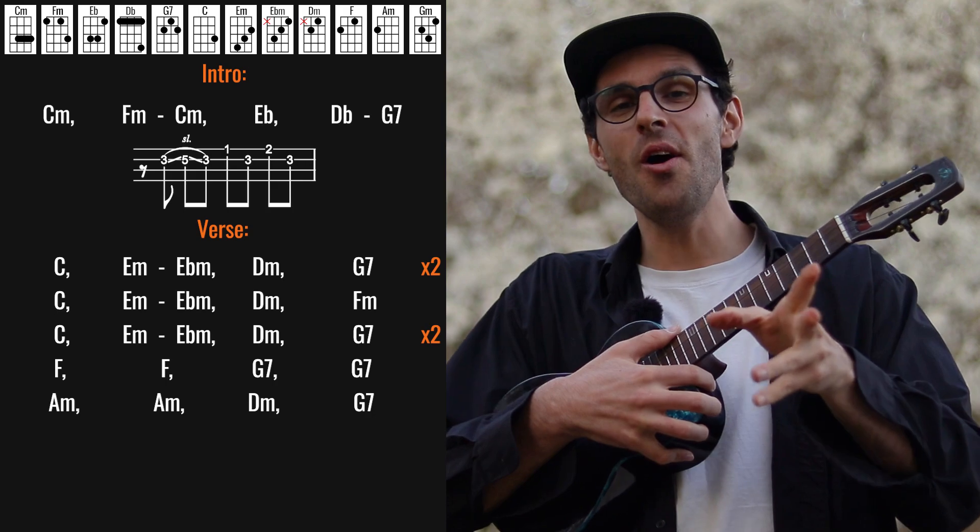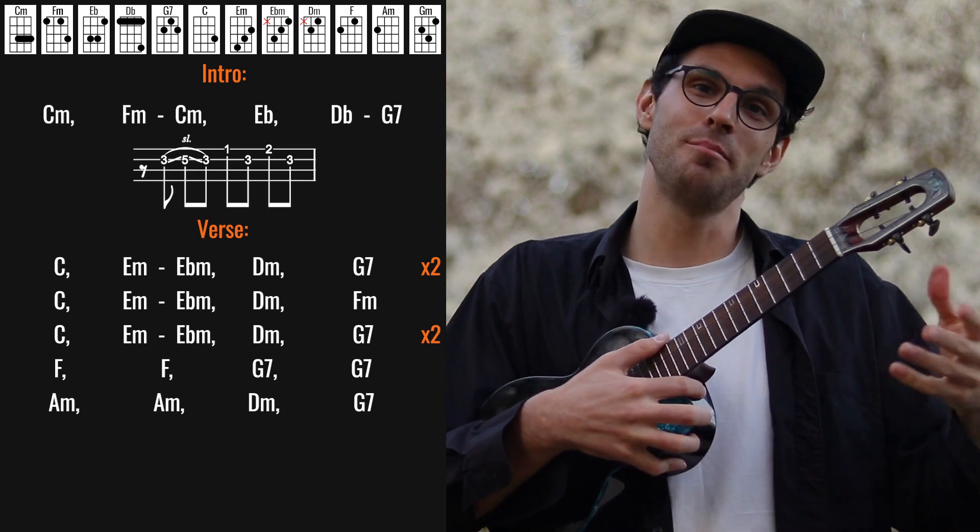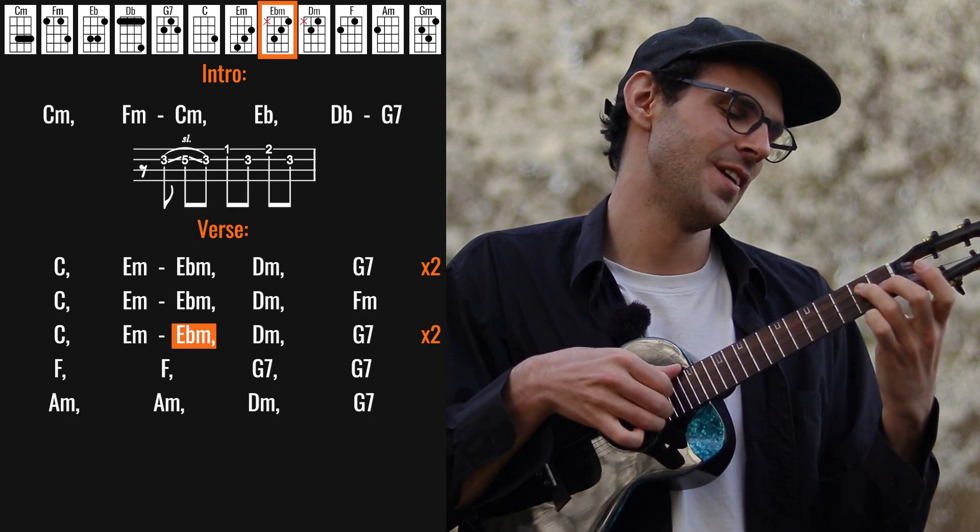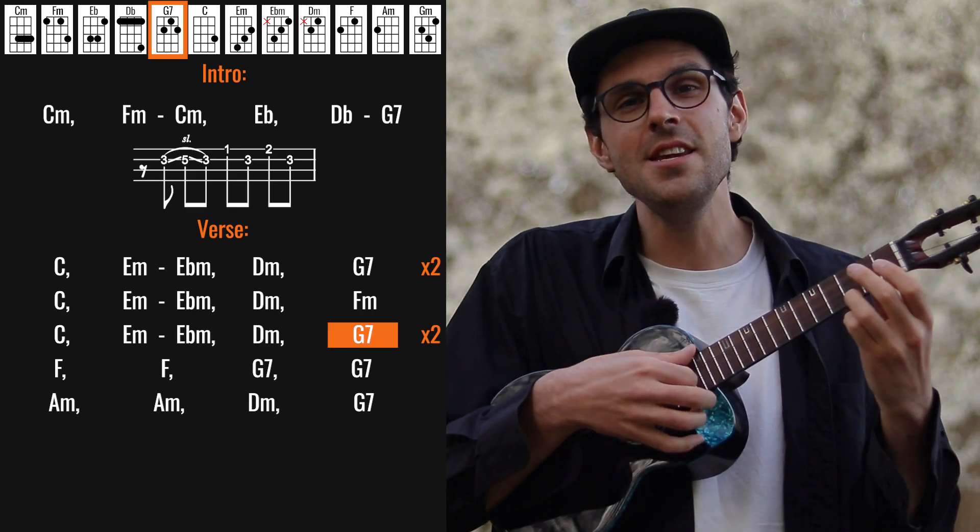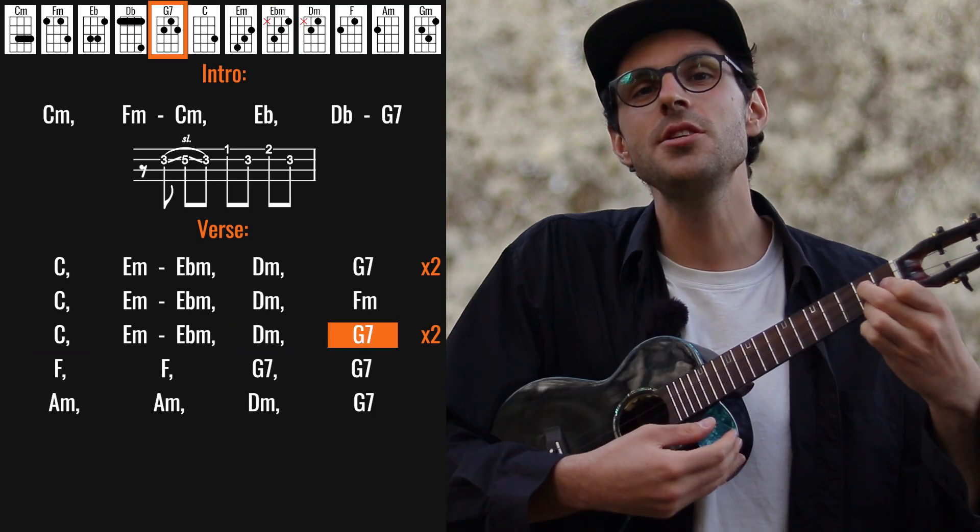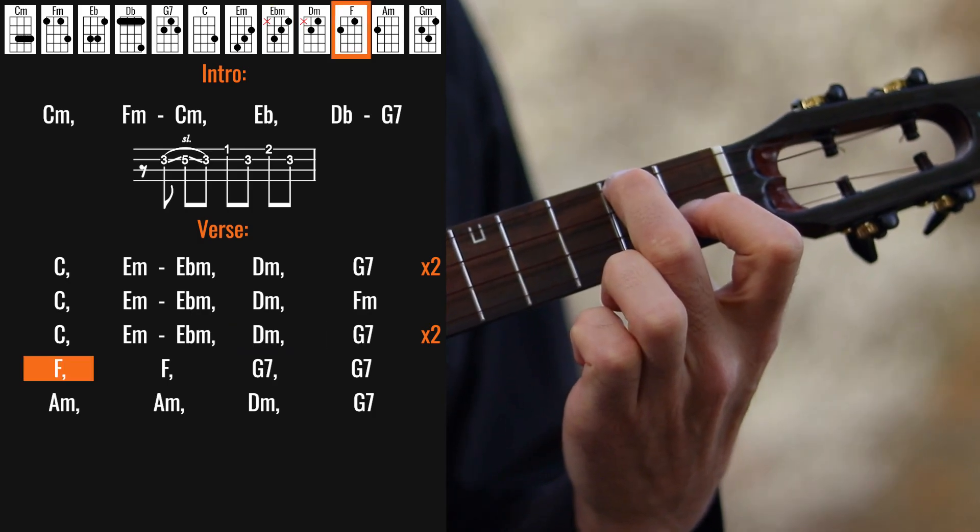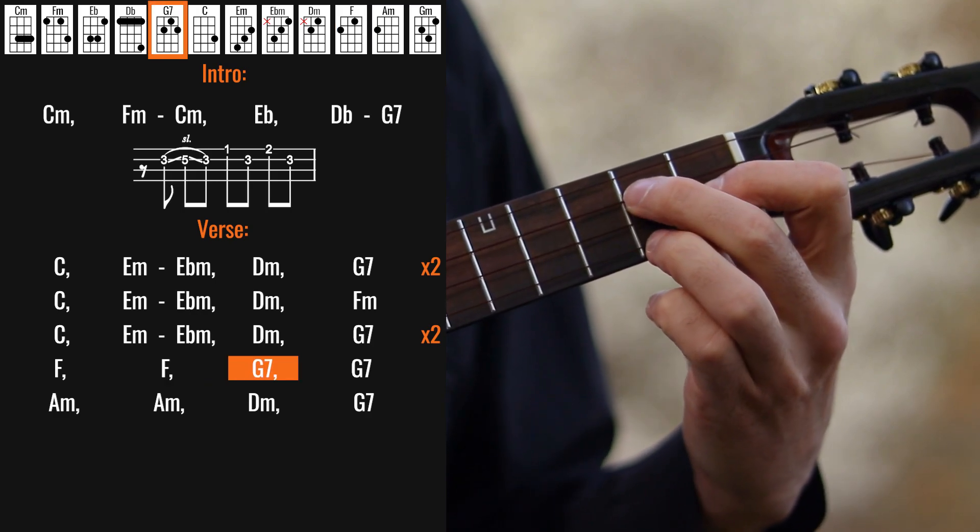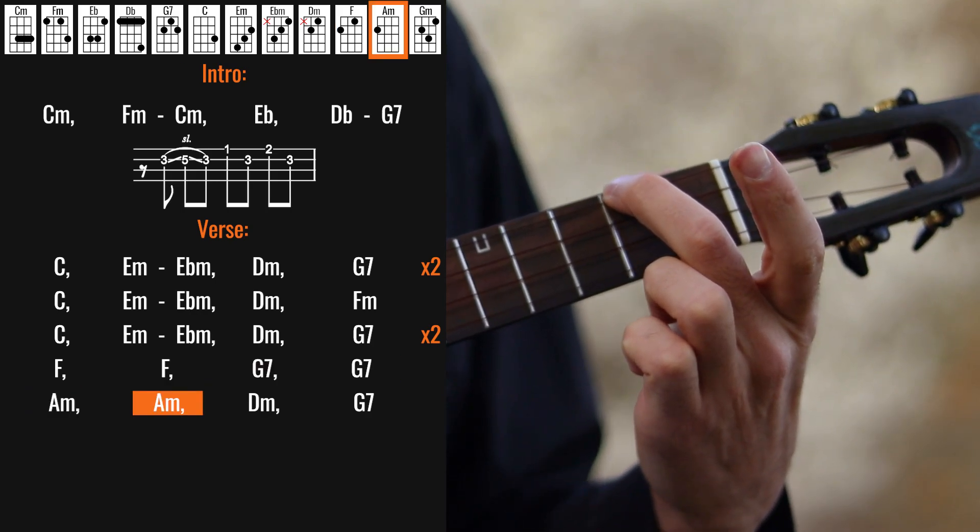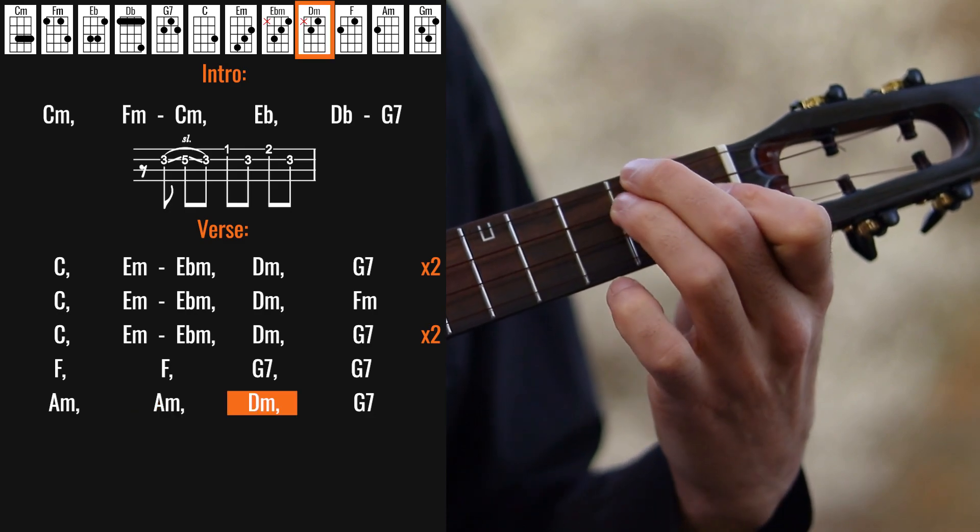And then we start the second part of the verse which starts the same way but it ends differently. Closer, let me whisper in your ear. Say the words you long to hear, and here we go to F, to G7, I'm in love with, to A minor, you, D minor, to G7.